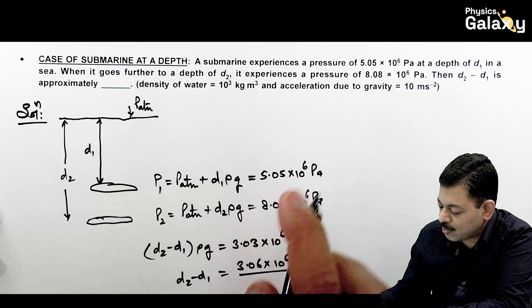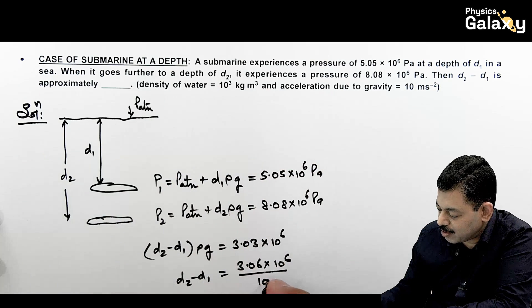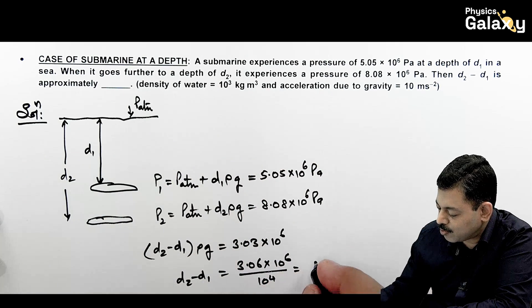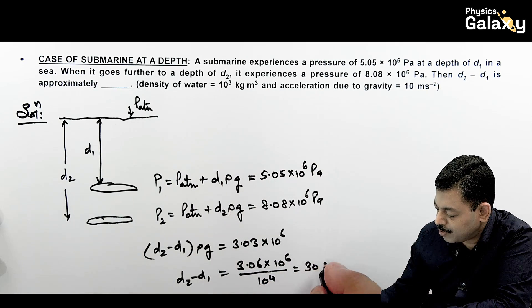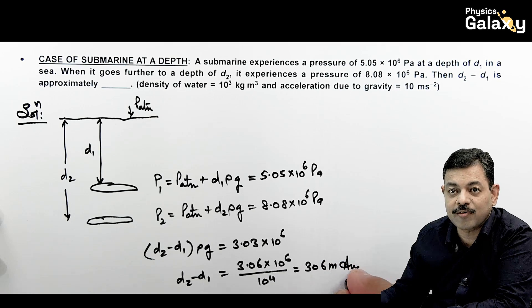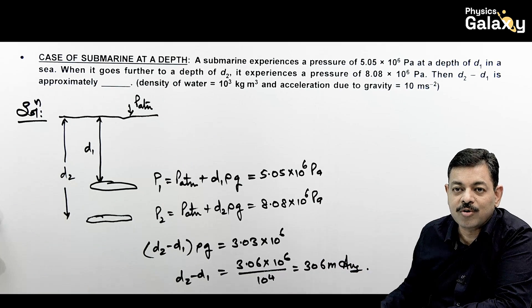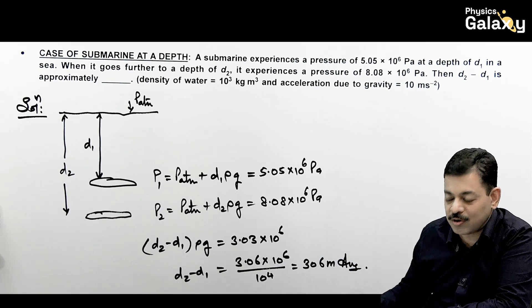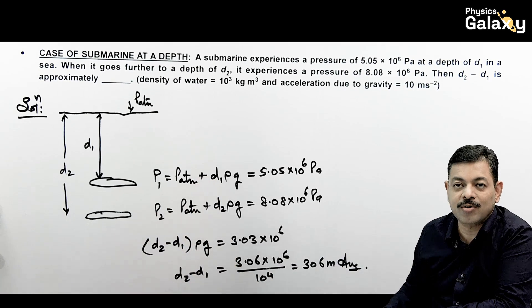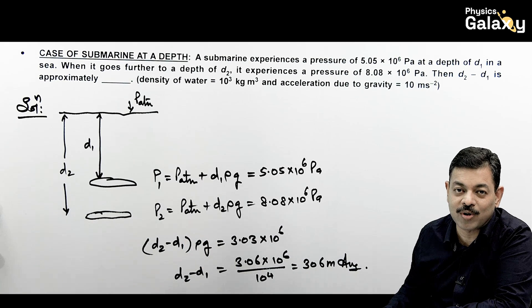So d2 - d1 = 3.03 × 10⁶ divided by ρg, where ρ = 10³ and g = 10, giving 10⁴ in the denominator. This comes out to be 306 meters. That is the result. You can directly solve it using the concept of pressure due to a liquid column.